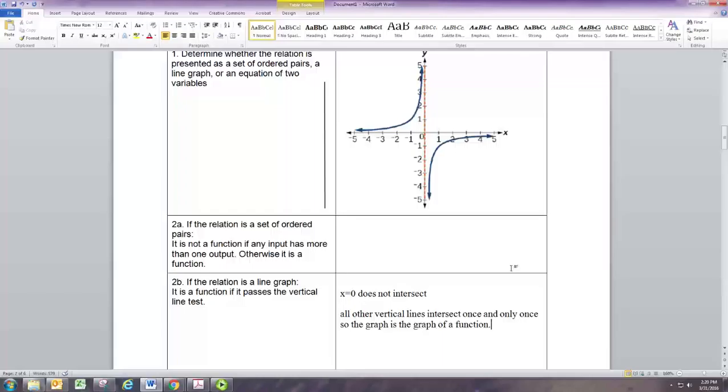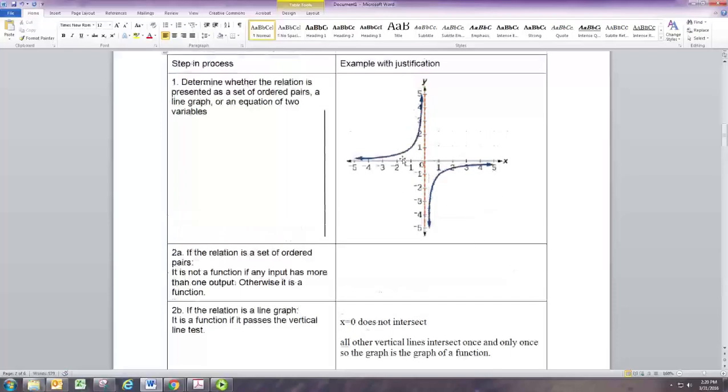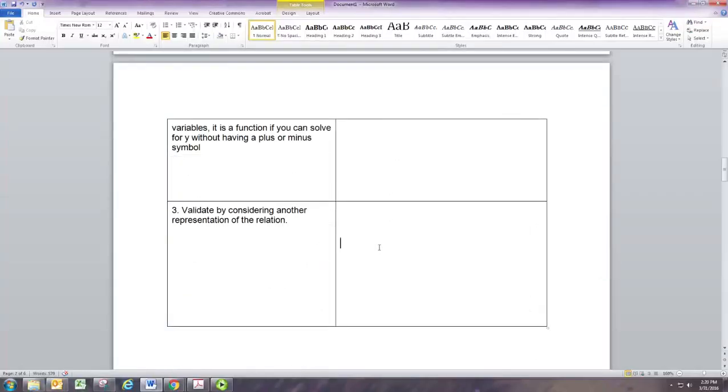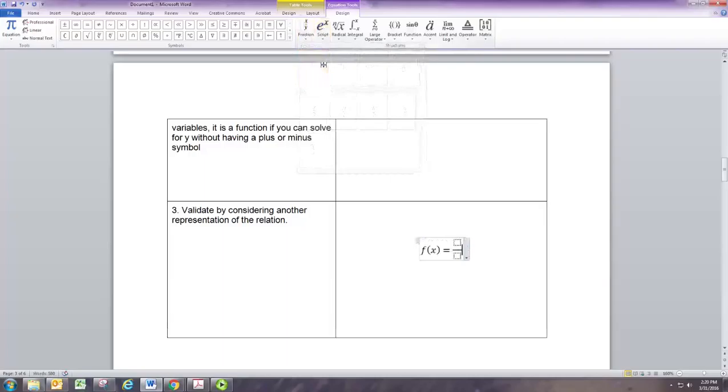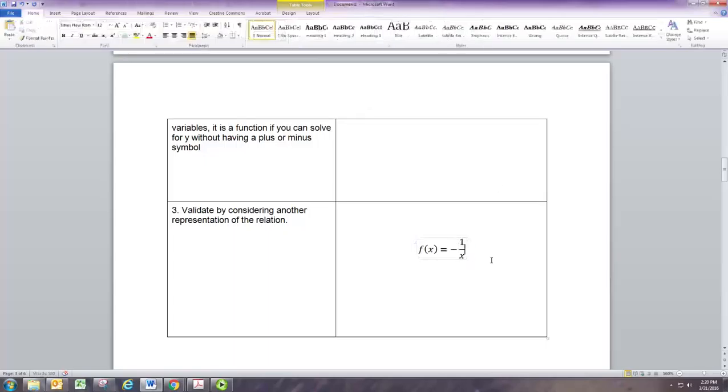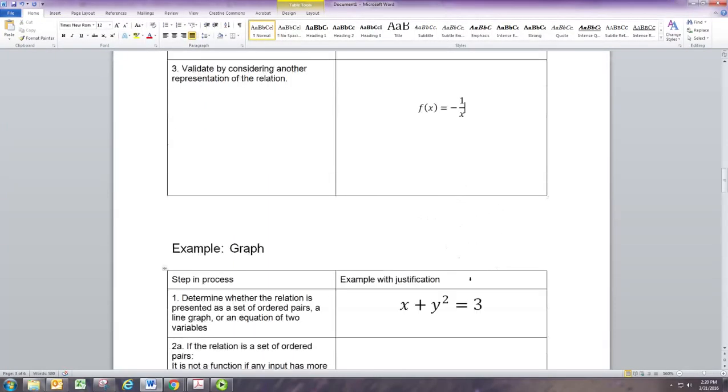Now how can we validate this? Well we could get the equation. This should be familiar. It's a rational function. A simple rational function with the vertical asymptote at x equals zero, horizontal asymptote at y equals zero, and it's negative on the right side. The equation is going to be f of x equals negative one over x. And you can check by graphing that.